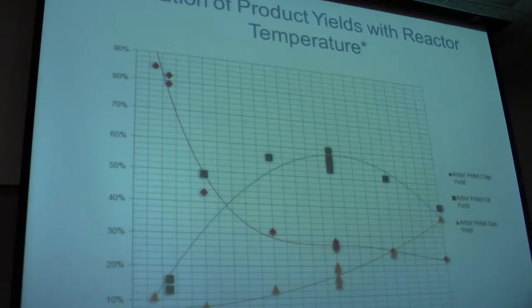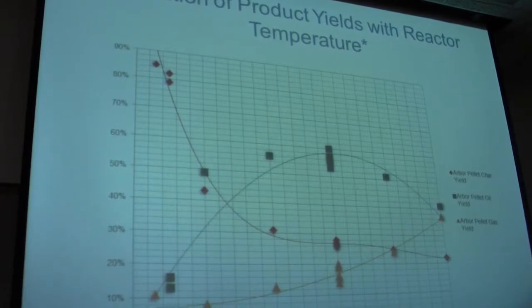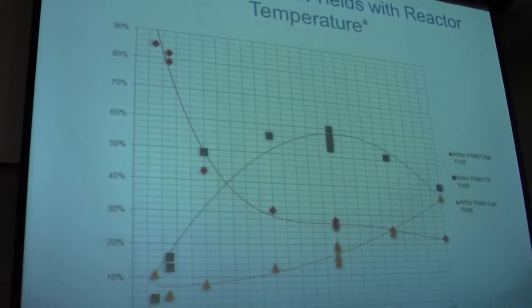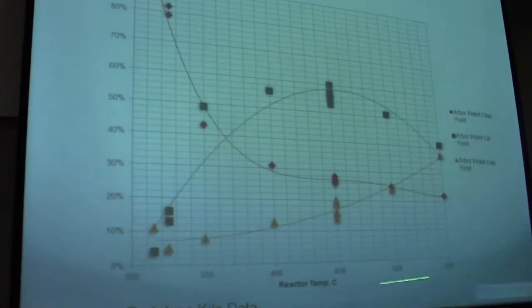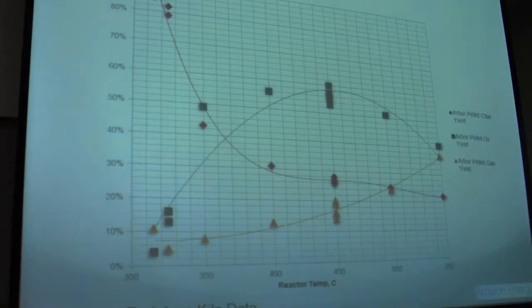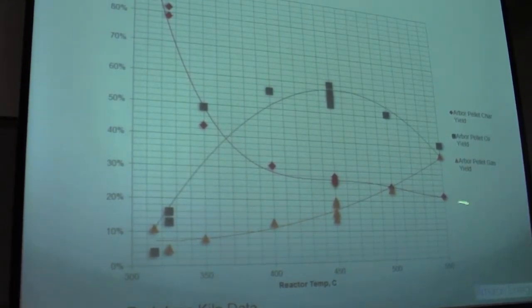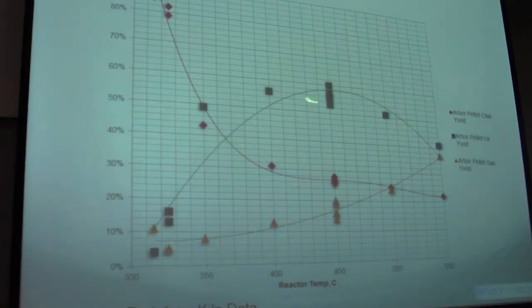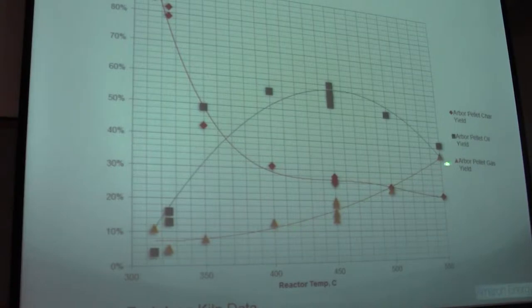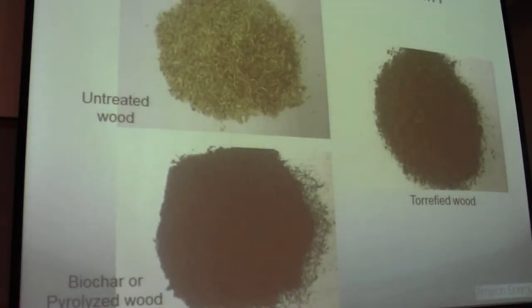So this is just an example for one type of woody biomass. Actually this was pelletized biomass. But it gives you a sense as a function of reactor temperature, the weight percent of products. So the solid products here, the oil product here, you can see sort of an optimum around 450 C, and then gaseous products. So just again, depending on what you want to produce, what product is of greatest value to you, you can kind of dial that in and obtain what you need. Just some images here in terms of the material. Some untreated wood, this is torrified, and the biochar here that we have processed.